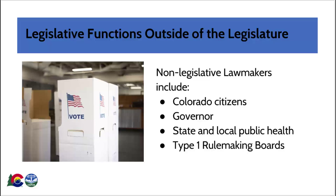State and local public health officials can issue various public health orders. Type 1 rulemaking boards promulgate rules that regulate public health and environmental issues statewide. For public health, important rulemaking boards are the Air Quality Control Commission, the Board of Health, the Solid and Hazardous Waste Commission, the Water Quality Control Commission, and the Water and Wastewater Facility Operators Certification Board.